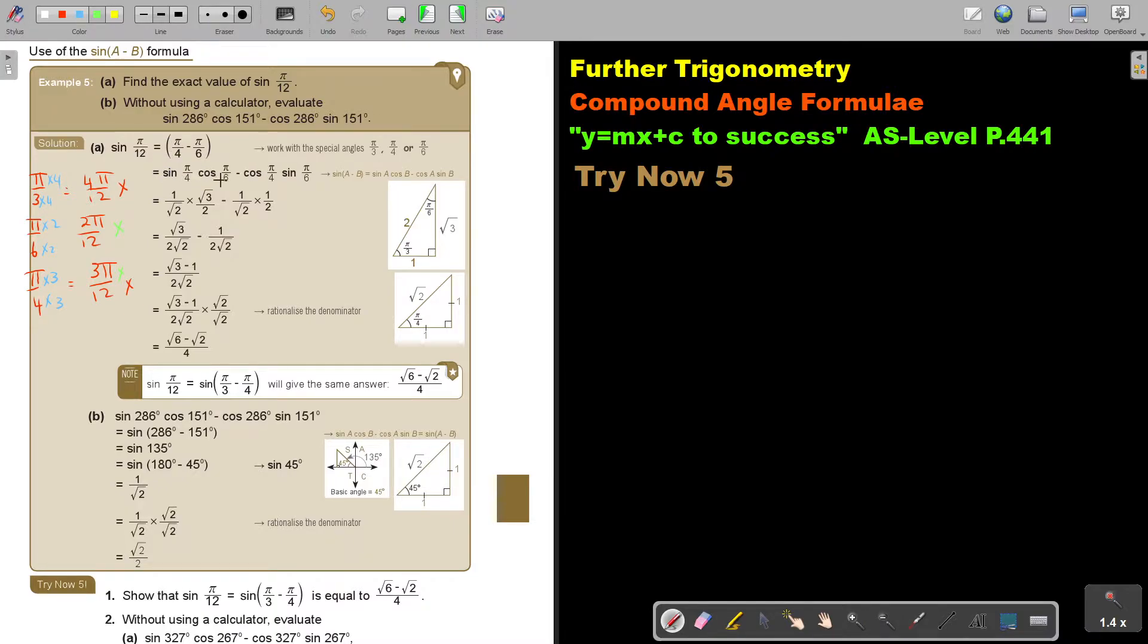And then I use the formula. So remember, it's sin the first one, cos the second one, minus cos the first one, sin the second one. And now I just substitute. So what is sin? It's opposite over hypotenuse. What is cos? This is now cos of π/6. Cos, it's square root 3 over 2. And then cos π/4. What is that going to be? It's adjacent over hypotenuse. And sin π/6. Sin is opposite over hypotenuse. And then I just multiply. The denominators are the same. I subtract. I rationalize the denominator. And this will be my final answer.